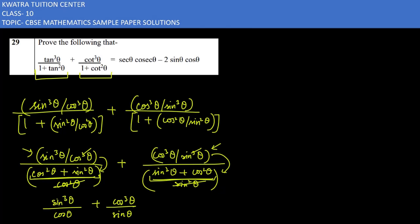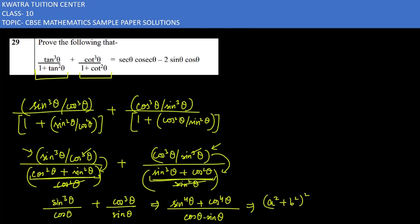Now we take LCM again. In the numerator we get sin⁴θ + cos⁴θ, and in the denominator we get cosθ·sinθ. To simplify sin⁴θ + cos⁴θ, we use the identity a⁴ + b⁴ = (a² + b²)² - 2ab.